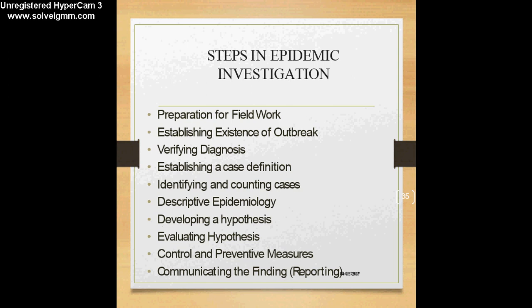These are the steps in epidemic investigation, which you can refer to in the next lecture recording. The first step is to prepare for field work — collecting your team with epidemiologists, microbiologists, people who can do the survey, and other needed personnel. After which you establish whether there is actually an outbreak by looking at defined case criteria. You verify the diagnosis with laboratory investigation, establish a case definition, then identify and count the cases.